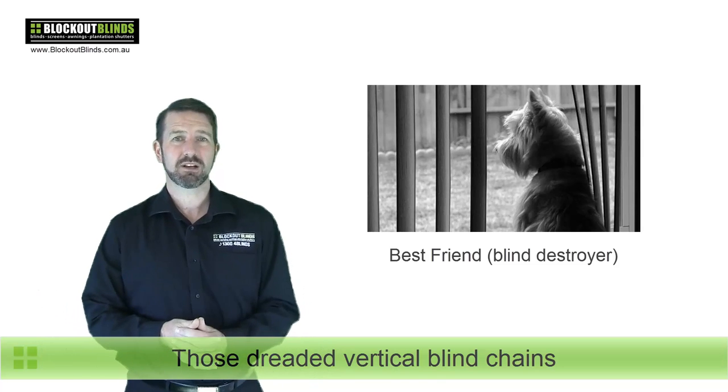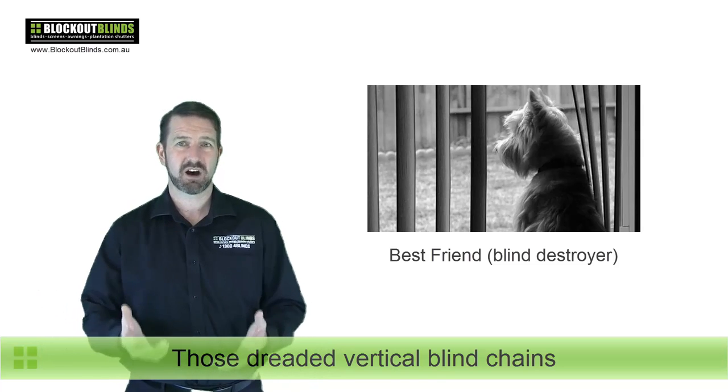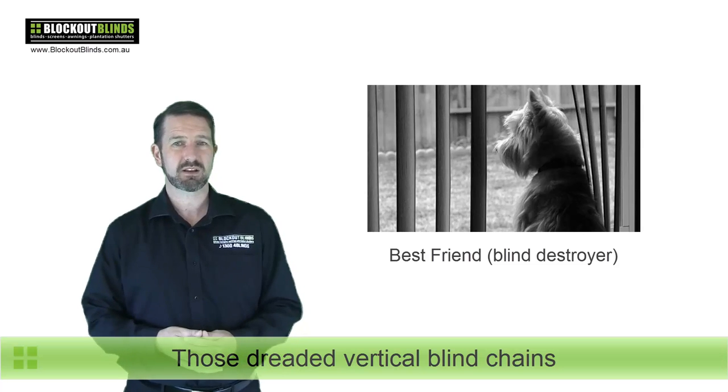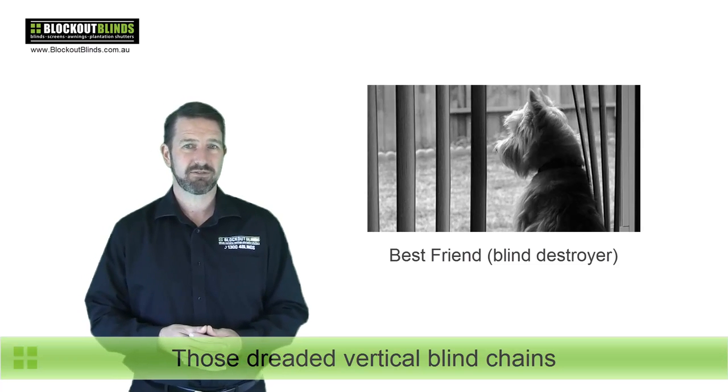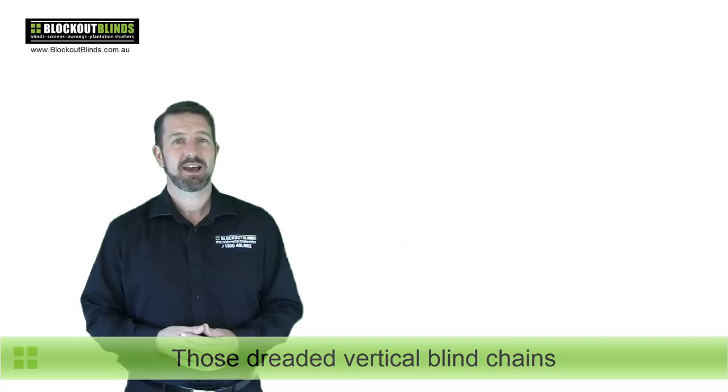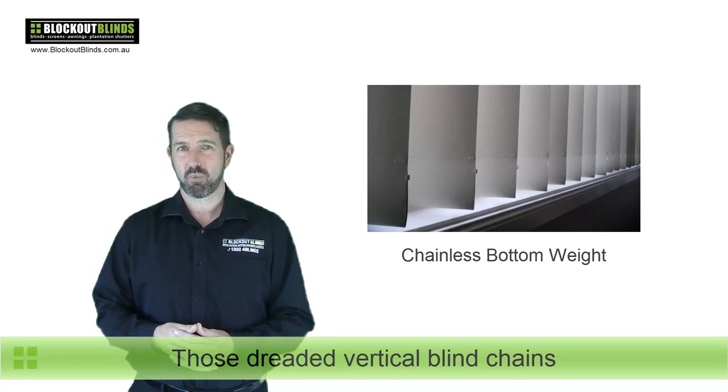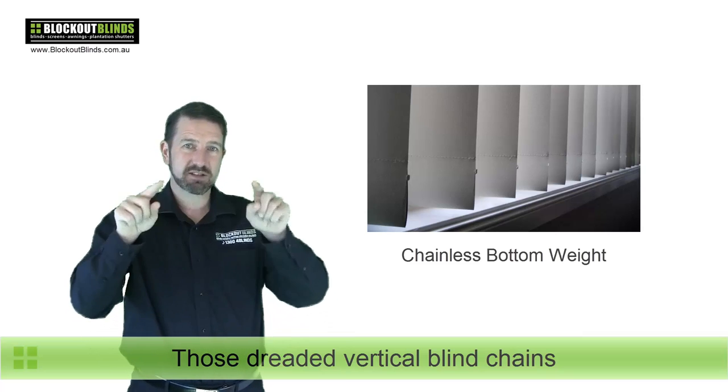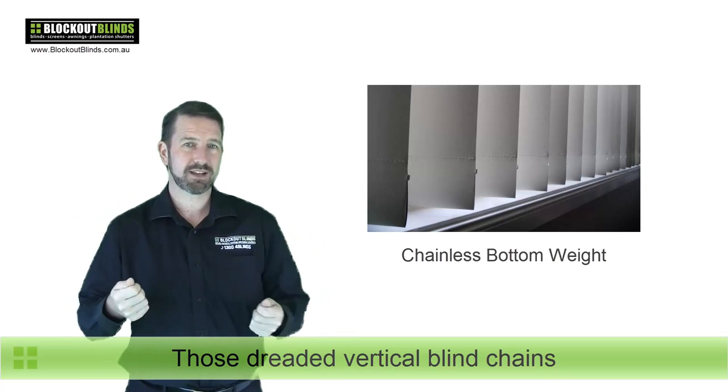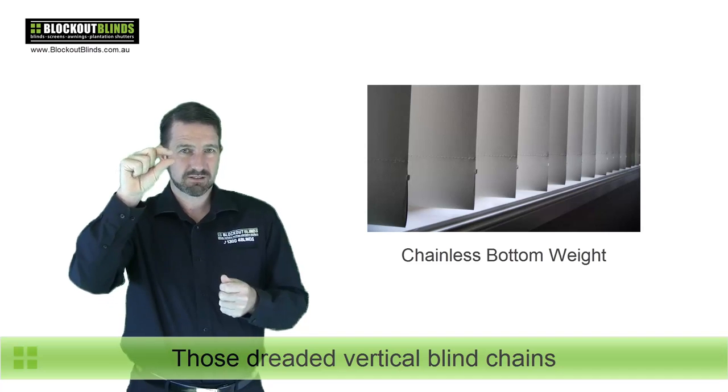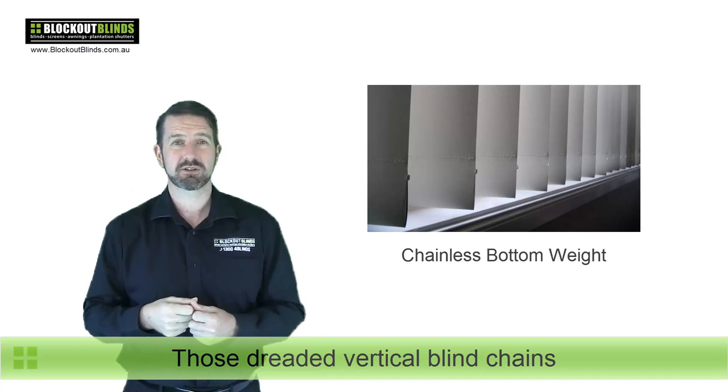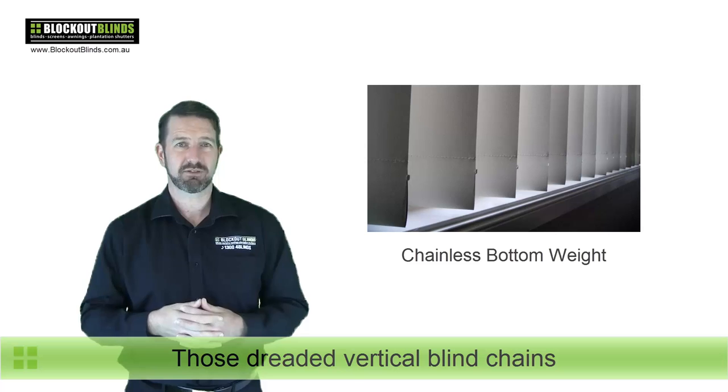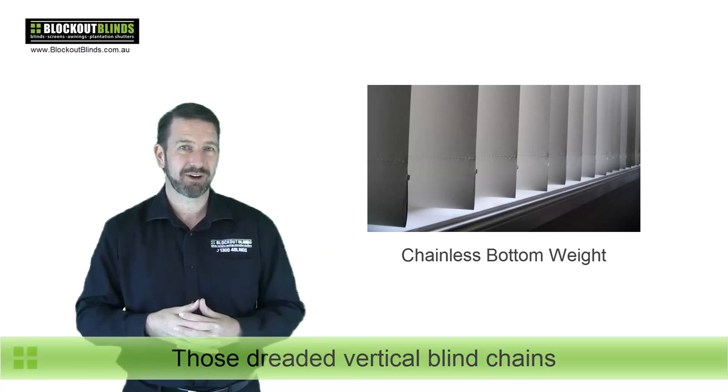A lot of people don't realize that there are options outside of these chains. The first option we have, as seen in this photo here, is a chainless bottom weight. Basically, it's exactly the same as the first picture except the chains have been removed from the weights and then the little lug that the chains normally clip onto has been snipped off, but manufactured that way.